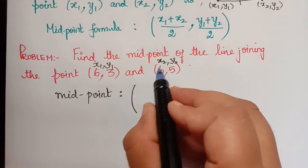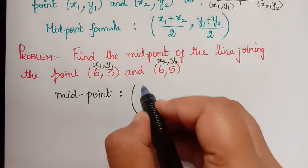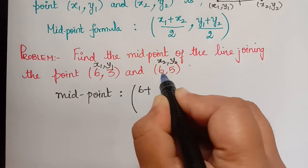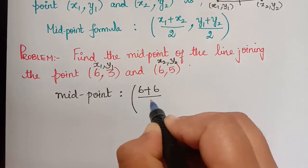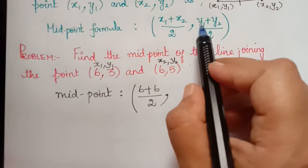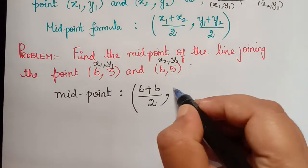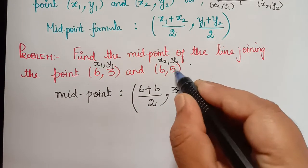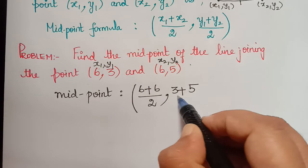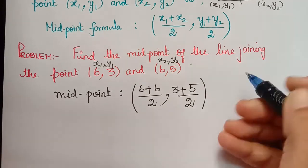x1 plus x2 divided by 2, so 6 plus 6 divided by 2 comma y1 plus y2 divided by 2. So y1 here is 3, so 3 plus y2 is 5, so 3 plus 5 divided by 2.